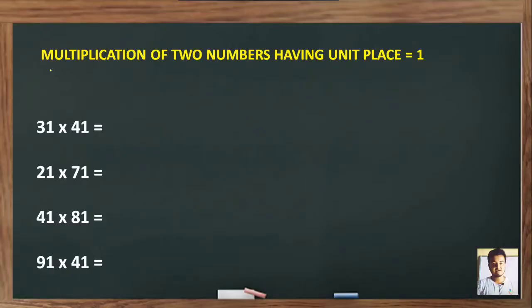Today we will discuss multiplication of two numbers having unit place as 1. That means you can multiply this type of number. So how can you do this? See, you can multiply just in one or two seconds.